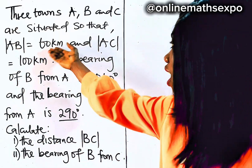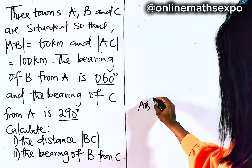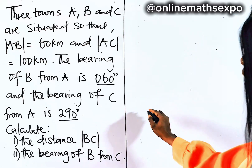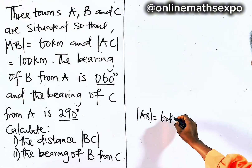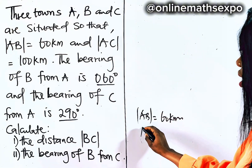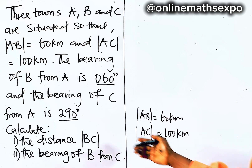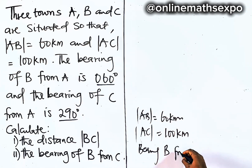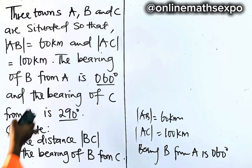Now, to answer this question, let me write this information out so we can clean some parts and get a better diagram. So, our AB is 60 kilometers, our AC is 100 kilometers, and the bearing of B from A is 60 degrees.